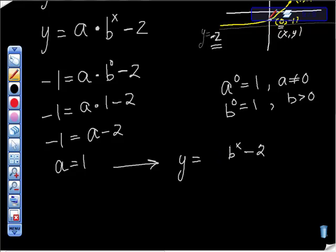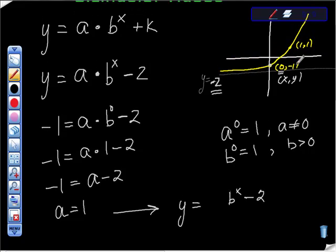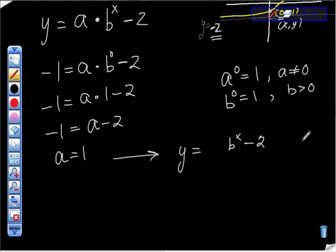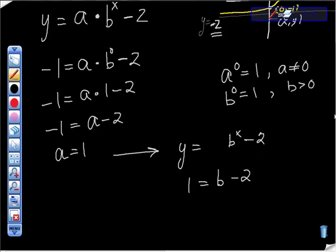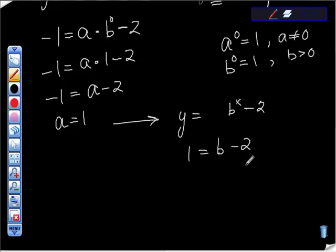You're like, okay, how am I going to get that b value? Well, we have another point. The other point that we have is the point (1, 1). So we know that y is 1 when x is 1. So b to the first power is b. So 1 is equal to b minus 2. Add 2 to both sides and we get b is equal to 3.